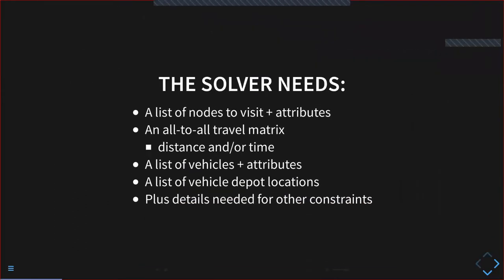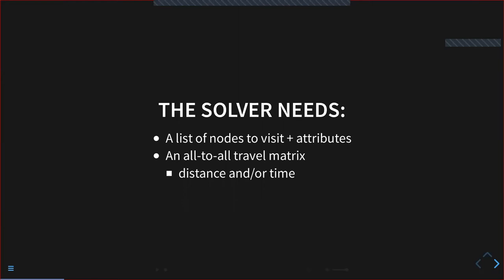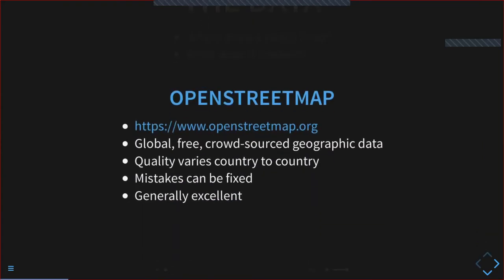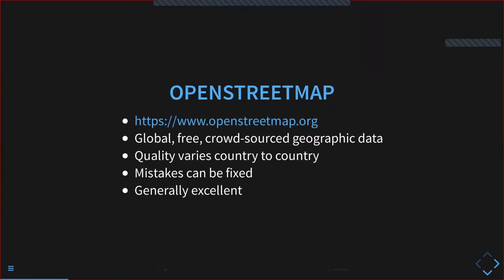The solver needs a list of nodes to visit, an all-to-all travel matrix between those nodes, and vehicle attributes and depot locations. I'll focus on the node list and travel matrix. We're using OpenStreetMap — an awesome tool where data covers the whole world, is fairly consistent, and is built by citizen geographers. Anybody can edit it and add to it.